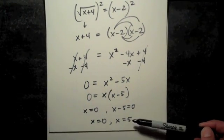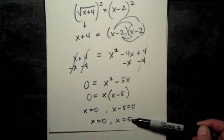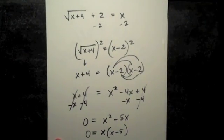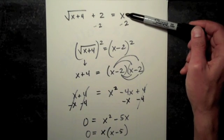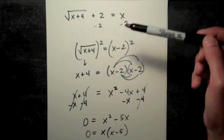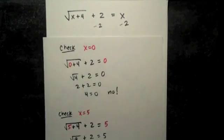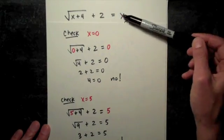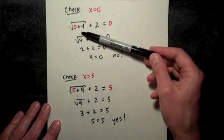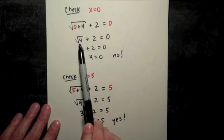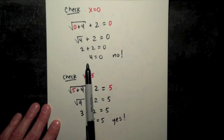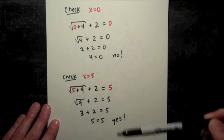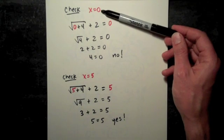And now step 4, we must check these two solutions to see which of them, if either, maybe both, but we need to check them to see which ones work in this original equation. And again, I have worked that out for you. X equals 0 was the first. I'm going to plug that in for both of the x's in this equation. You can see how that works out. 0 plus 4, square root of 4 is 2. We get 4 on the left, 0 on the right. X equals 0 gives us a false statement. So that is not a solution to the equation.